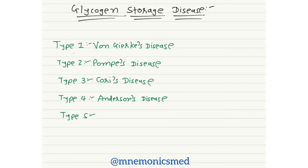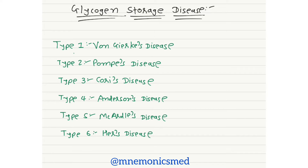Type 5 Glycogen Storage Disease is McArdle's disease — you have to remember McArdle's disease for type 5. Type 6 Glycogen Storage Disease is Hers' disease — you have to remember Hers' disease for type 6 Glycogen Storage Disease.